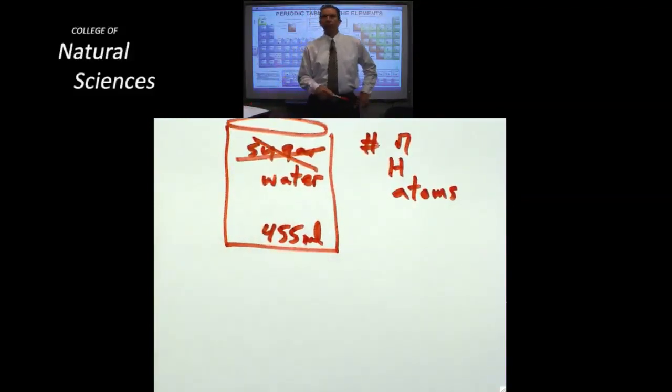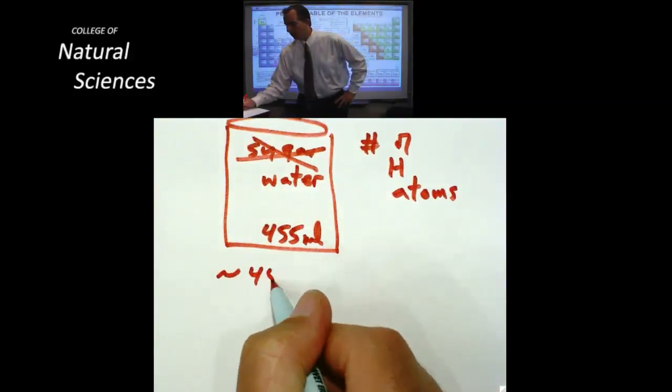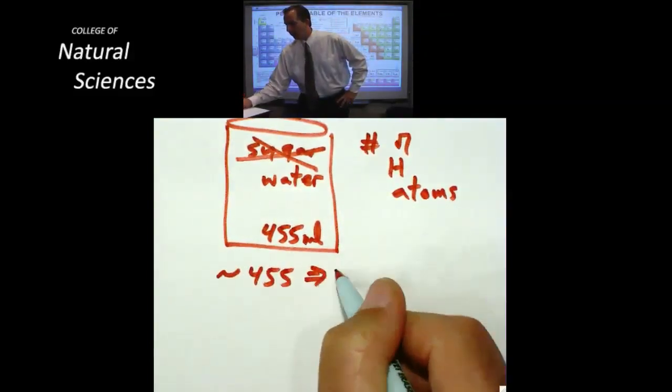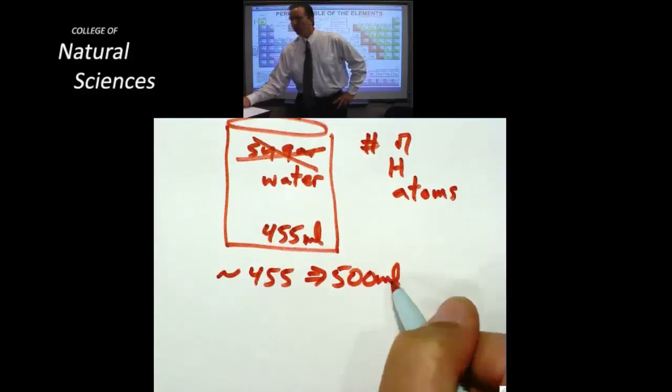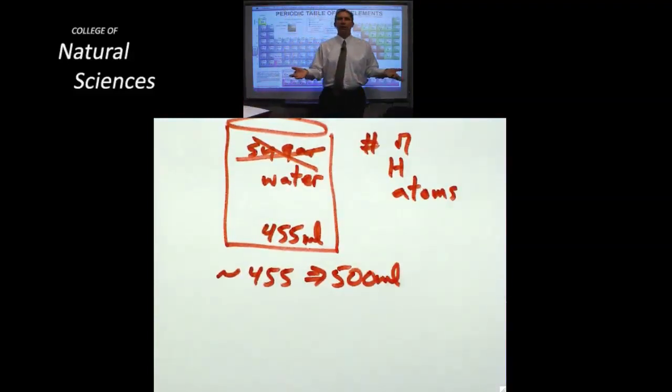You know what 455 milliliters of water is? It's actually about 500 milliliters of water. Why did I make it 500 milliliters of water? Because I don't have a calculator.